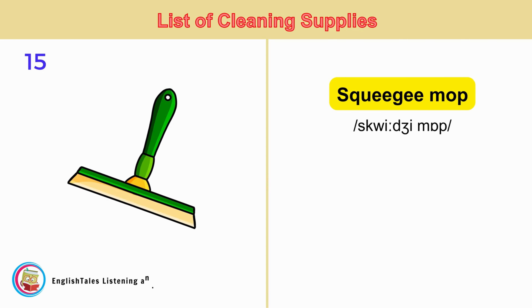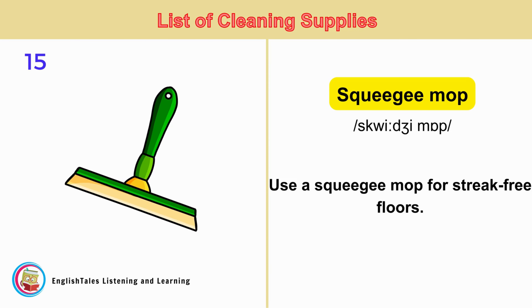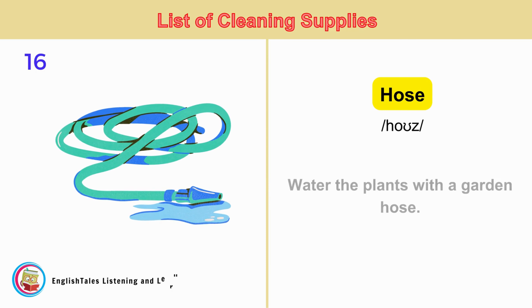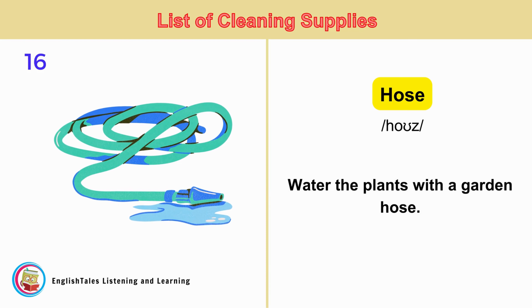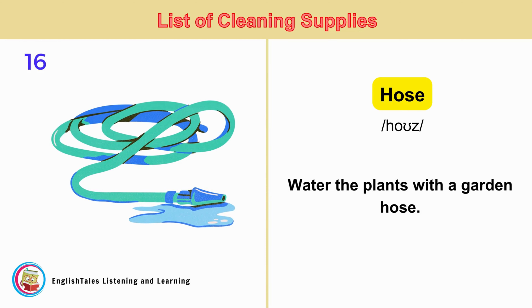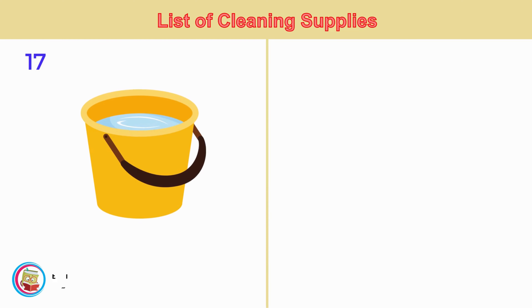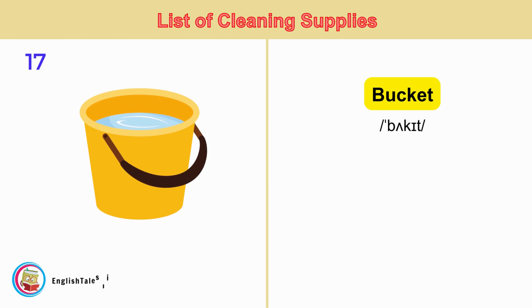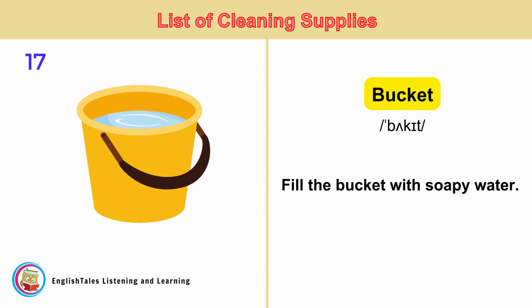Squeegee Mop. Use a squeegee mop for streak-free floors. Hose. Water the plants with a garden hose. Bucket. Fill the bucket with soapy water.